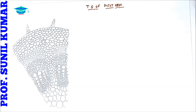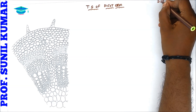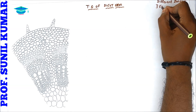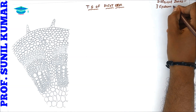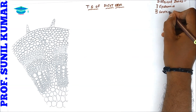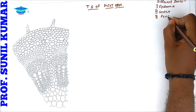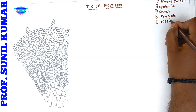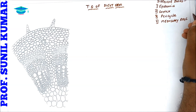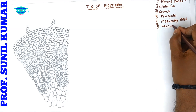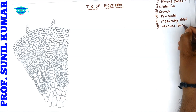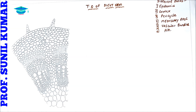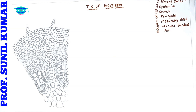When we talk about the dicot stem, we need to understand that it has different zones. The first zone is epidermis, second is cortex, third is pericycle, fourth is medullary rays, fifth is vascular bundle, and sixth is the pith. The anatomy of the dicot stem shows the presence of multicellular hair root.